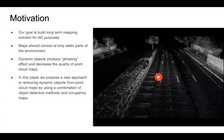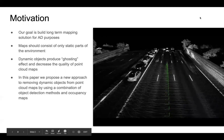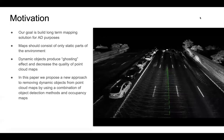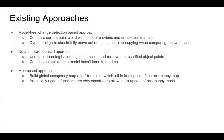We propose a new approach to remove dynamic objects from point cloud maps by using a combination of object detection methods and occupancy maps. A good amount of work has been done on detecting and removing dynamic objects in laser scans, and different methods have been proposed. These methods can be classified into three categories: model-free approach, neural network-based approach, and map-based approaches.